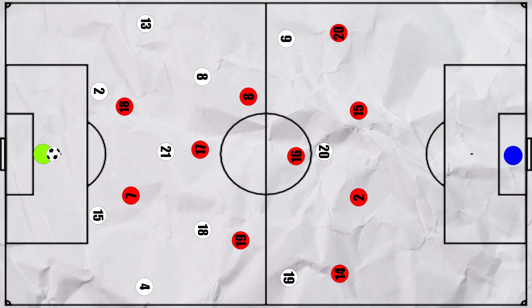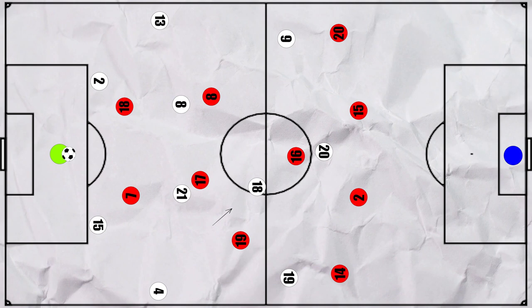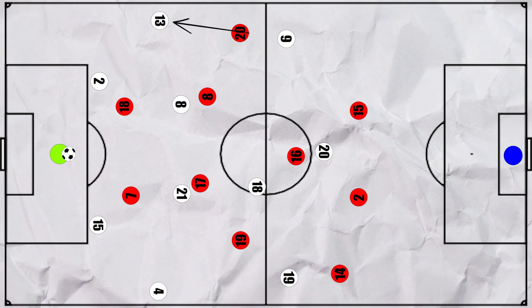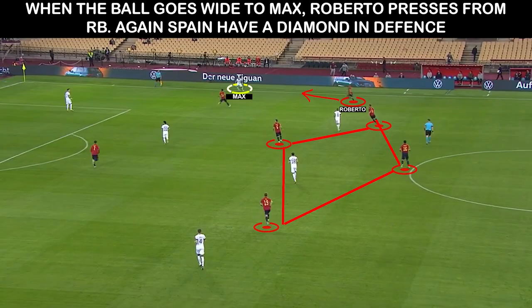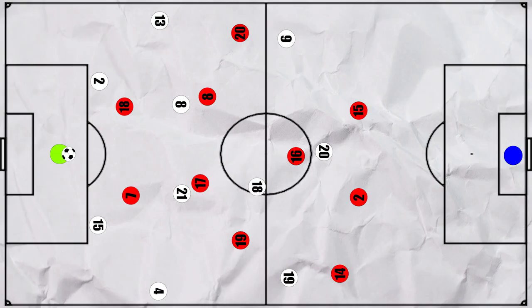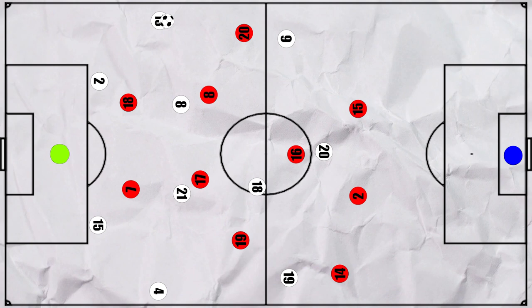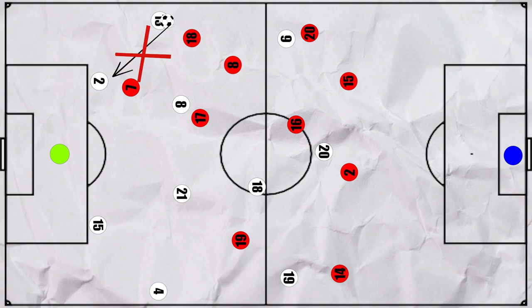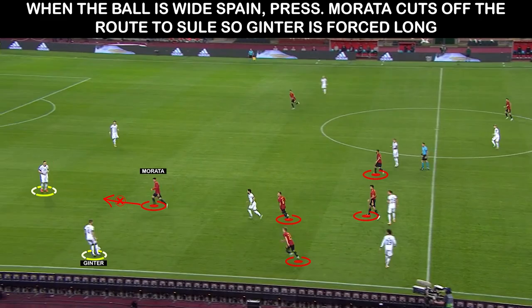Neuer would then look to push higher to ensure the 3v2 advantage. Gündogan and Kroos would drop deeper to create new options whilst Goretzka pushed higher, and Spain could shift an extra midfielder higher to even things up. This meant that at times Philipp Max would be an easy outlet, although Roberto positioned himself so that he could press if the wide pass was launched whilst keeping an eye on the wide region. If the ball did come to a fullback, Spain used an intense lateral press, preventing any passes back infield and often winning the ball back quickly.